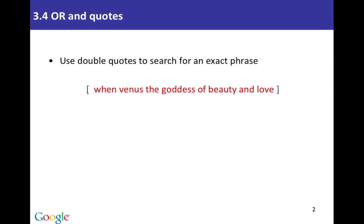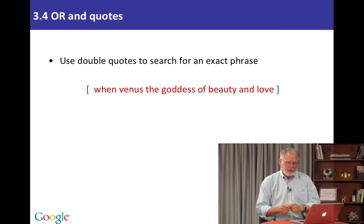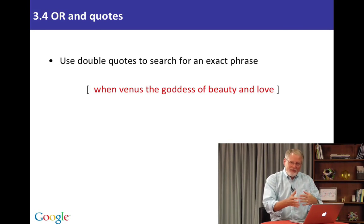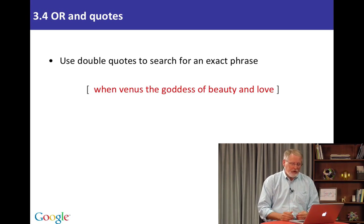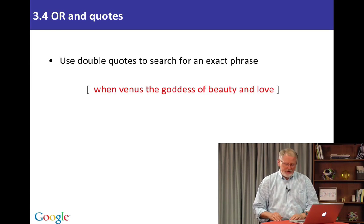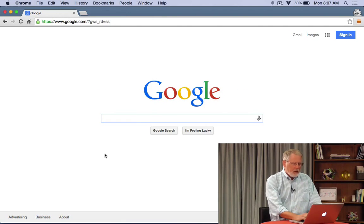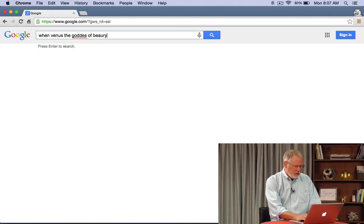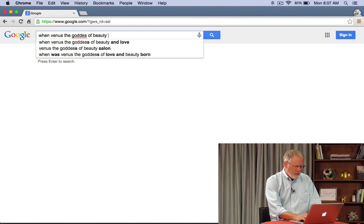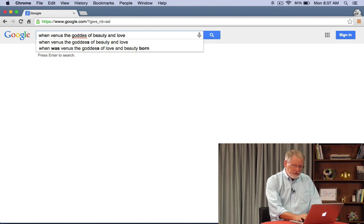You use double quotes when you want to look for a precise phrase. Here's a phrase that seems kind of obscure: "when Venus the goddess of beauty and love." Now I happen to know that that's a lyric from an old song, but let's see what happens when we actually do a search for that without the quotes.